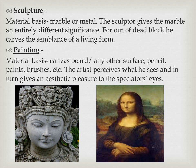Sculpture: the material basis used is marble or metal. The sculptor gives the marble an entirely different significance, for out of a dead block he carves the semblance of a living form. That gives it the dignity of art.